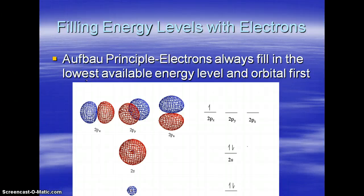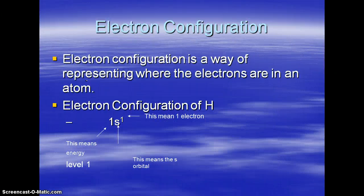The Aufbau principle describes the fact that electrons are going to fill the lowest available energy level and orbital first. That's why we always start with 1S, because an electron is going to go to 1S first because 1S is the lowest energy. Then it's going to go to 2S, because 2S is the next lowest energy, and then 2P and so on. So when we write electron configuration, we're representing where all the electrons in that atom are. For example, 1S1 tells you you're looking at the 1S orbital with only one electron — that's the configuration for hydrogen.